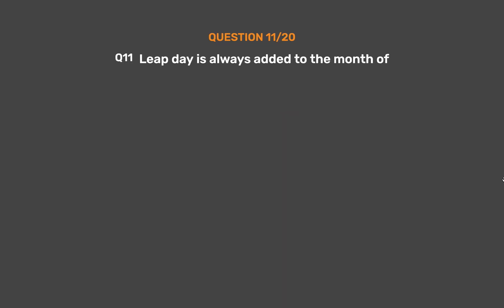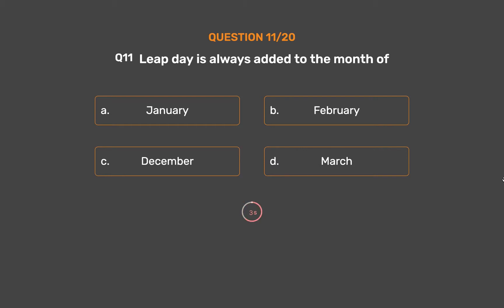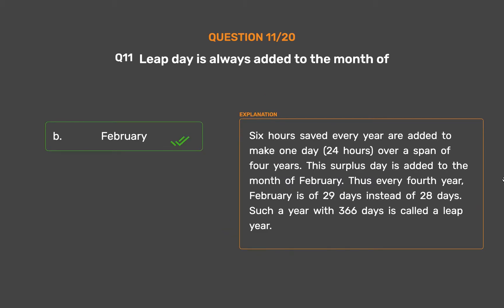Question number 11. Leap days are always added to the month of: Option A: January. Option B: February. Option C: December. Option D: March. The correct answer is Option B: February. Six hours saved every year are added to make one day (24 hours) over a span of four years. This surplus day is added to February, making it 29 days instead of 28. Such a year with 366 days is called a leap year.